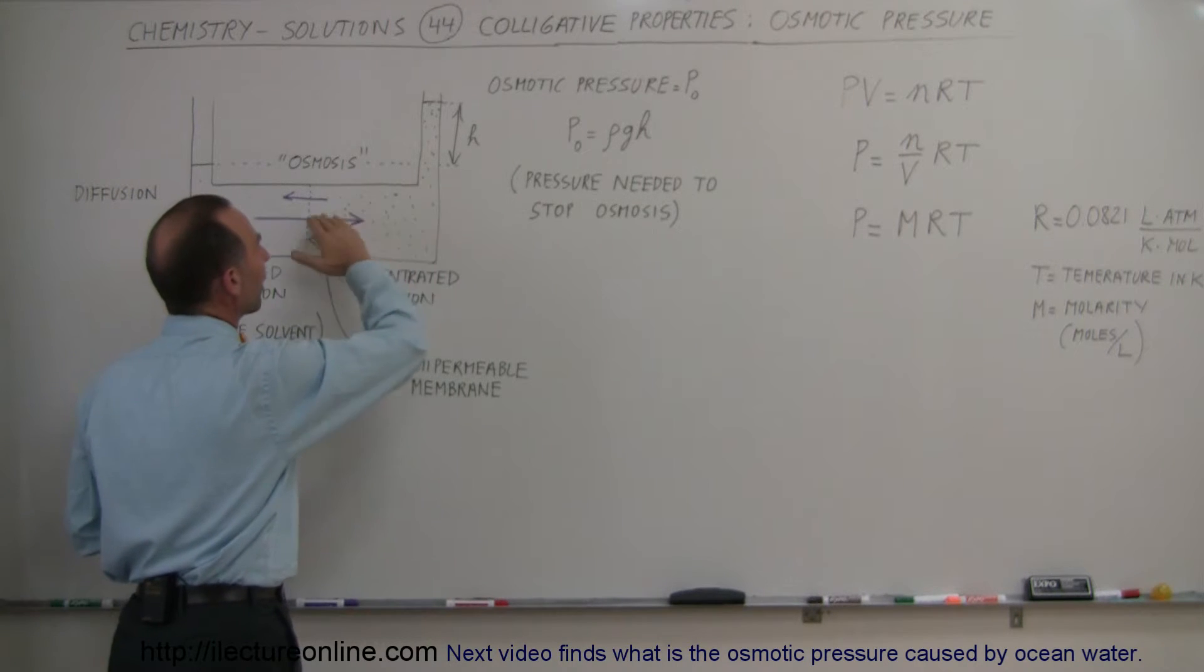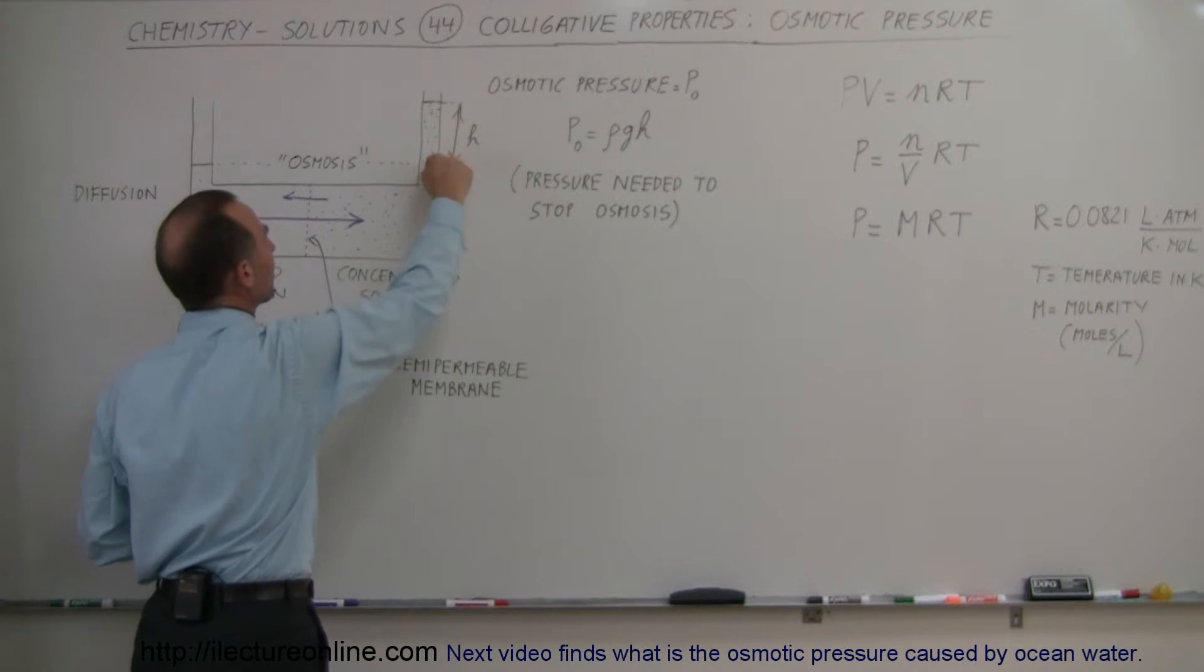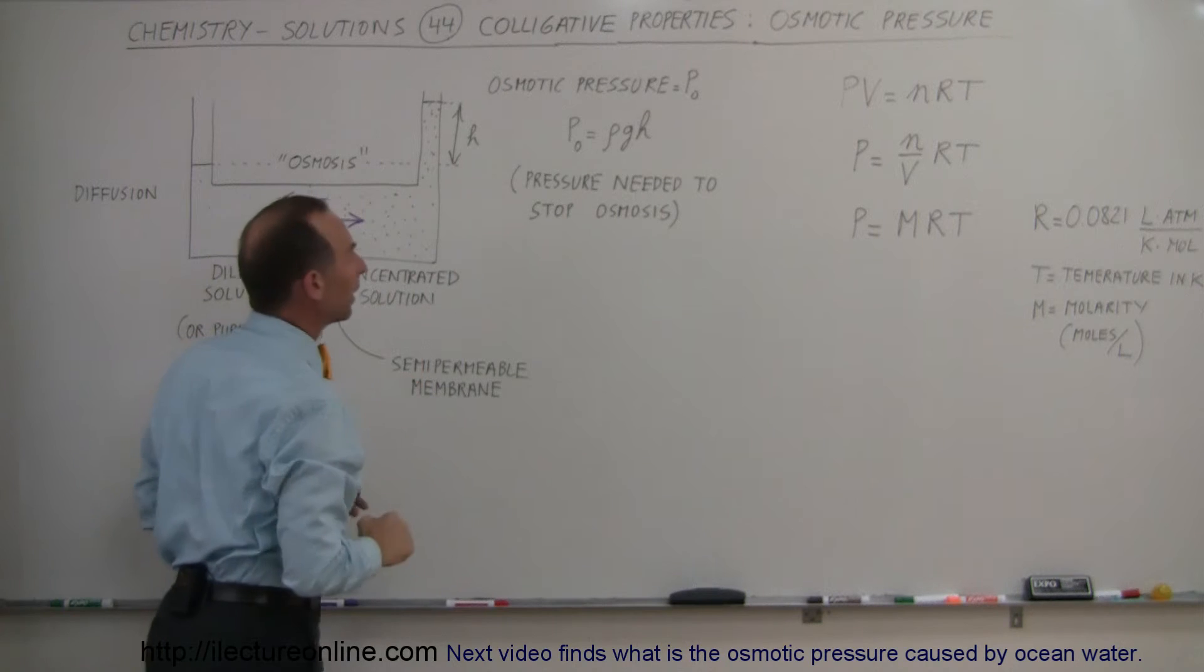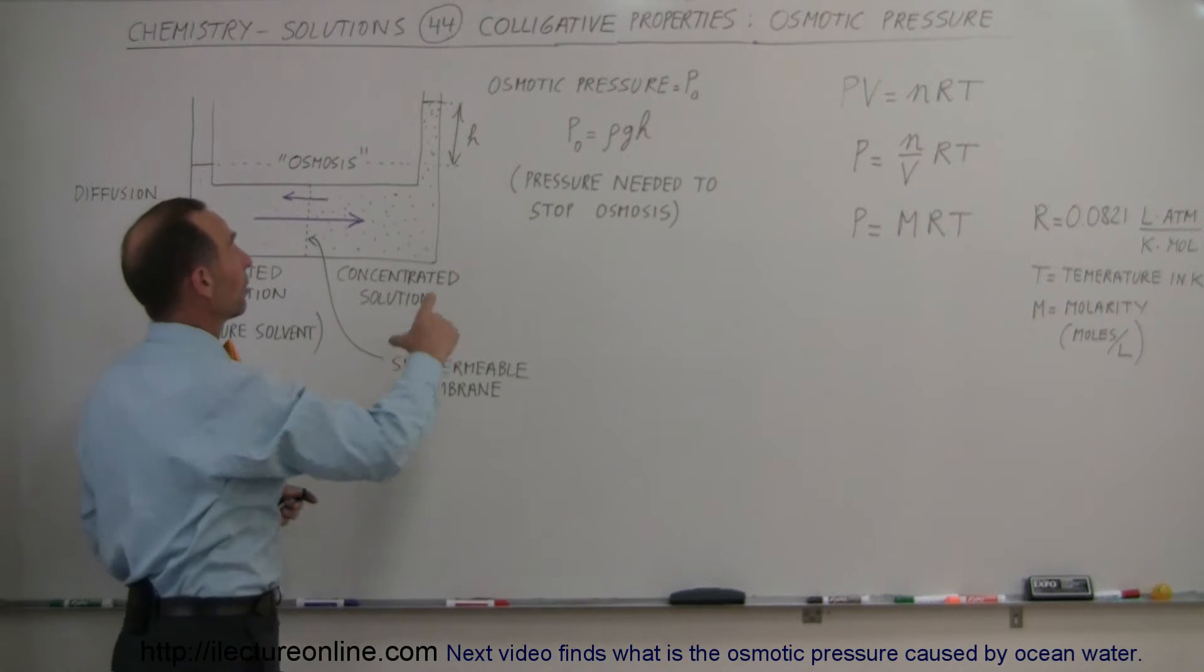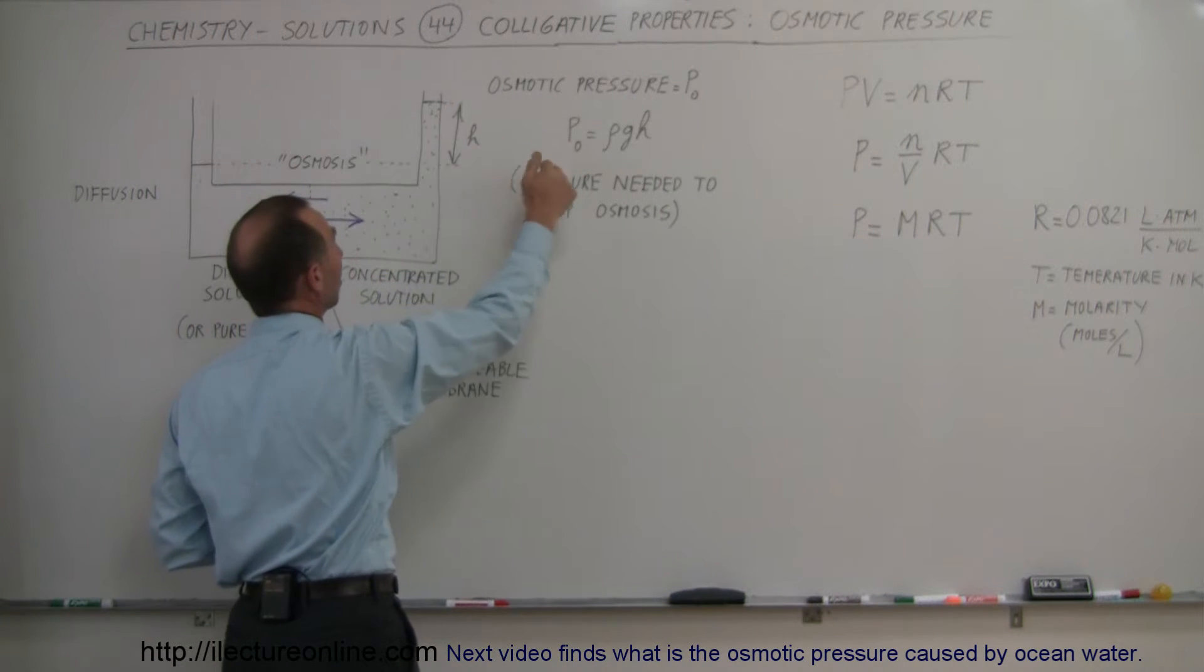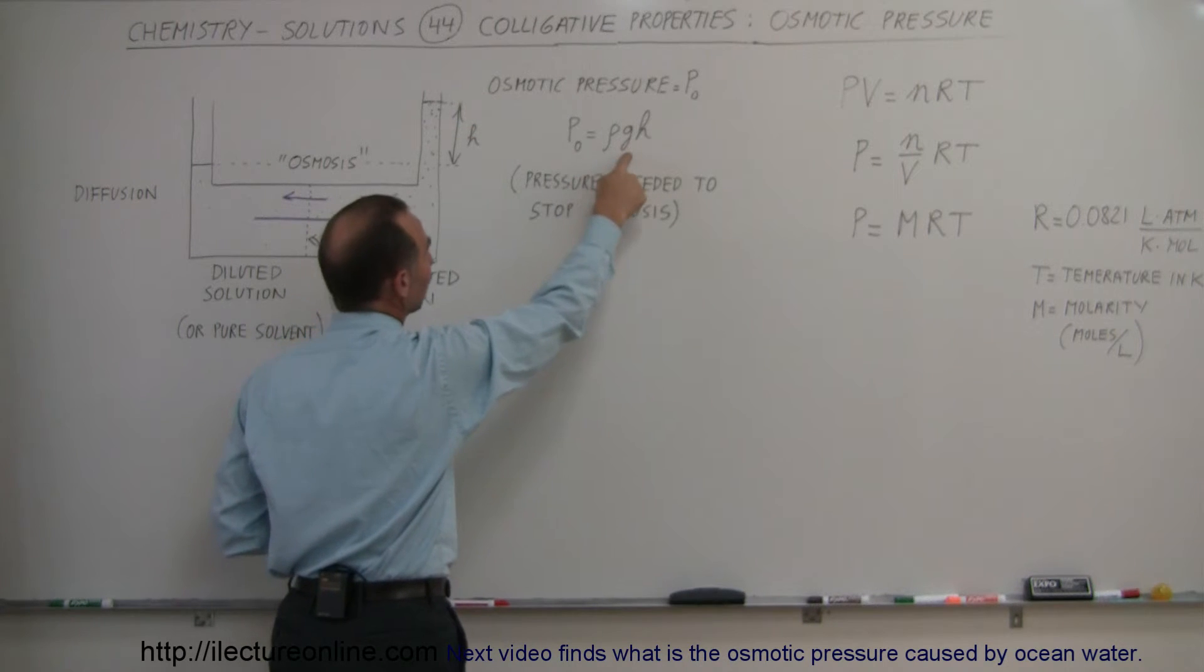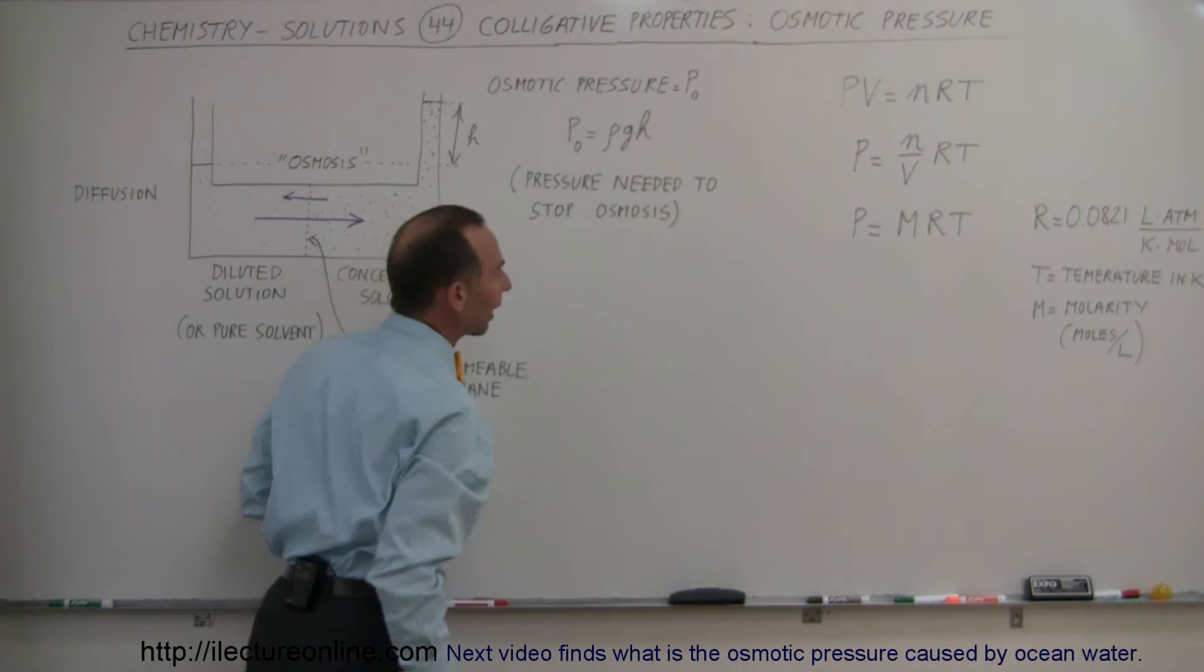Therefore building up osmotic pressure, which can be measured simply by measuring the height of the column that would build up due to the water molecules driving that pressure. And in physics, we can measure the pressure by measuring the height of this column, saying that the pressure is equal to the density of the liquid times the acceleration of gravity times the height of the column.